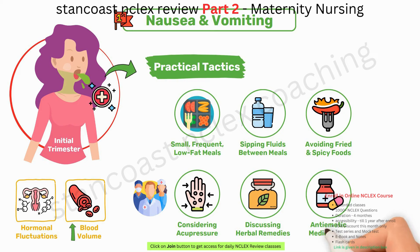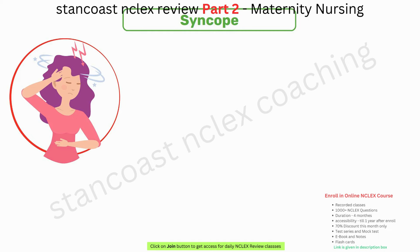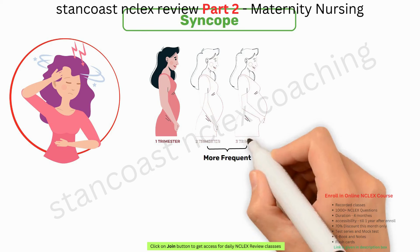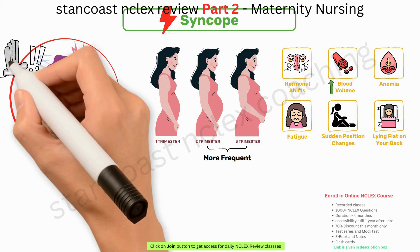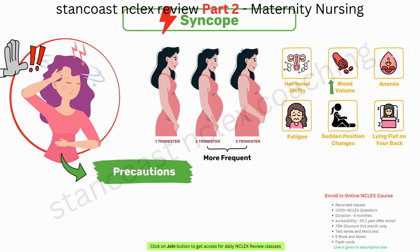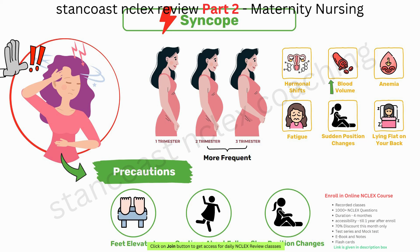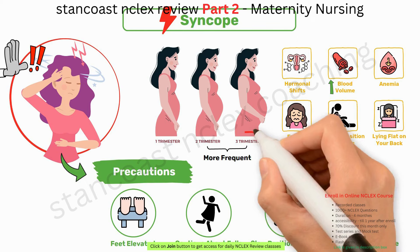Syncope can surface in the first trimester but may become more frequent in the second and third trimesters. Hormonal shifts, increased blood volume, anemia, fatigue, sudden position changes, or lying flat on your back can trigger syncope. To prevent fainting episodes, pregnant individuals should sit with their feet elevated, be cautious about falls, make slow position changes, and avoid the supine position — especially in later trimesters — to prevent supine hypotension due to pressure on the inferior vena cava.